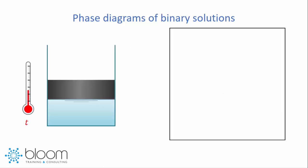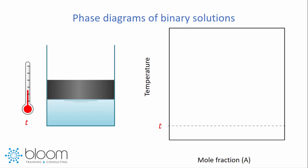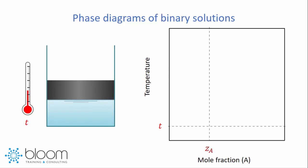Let's now take our drawing here to the left and create a graph. In the y-axis we're going to represent the system temperature, whereas the x-axis is going to represent the mole fraction of component A. Let's say that initially we are at a temperature t and a mole fraction of A, ZA. Our system in this state can therefore be represented by the point shown as a red x.